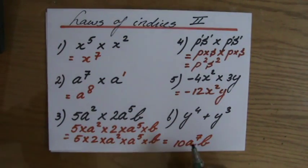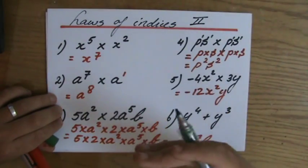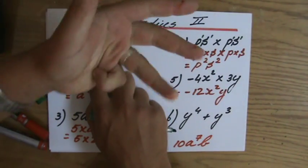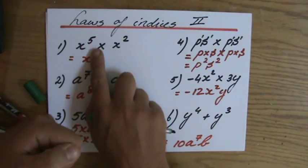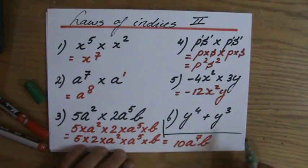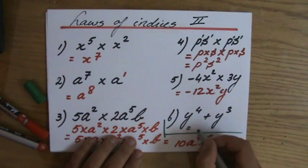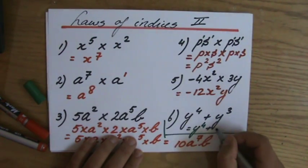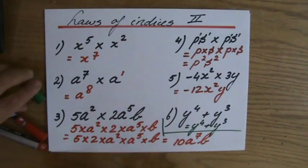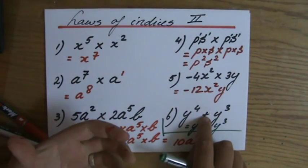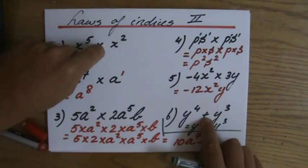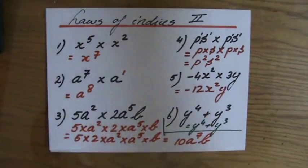Just to make absolutely sure about question 6: the first law of the indices says when the bases are the same and you're multiplying, you add the indices. But if you are adding — for example y to the power 4 plus y to the power 3 — that is a completely different question and has nothing to do with this law. The answer is simply y to the power 4 plus y to the power 3, because you cannot add these two terms — they are not like terms, the powers are not the same. Please distinguish between adding and multiplying. It's time to go to the second law of the indices — I'll see you there.